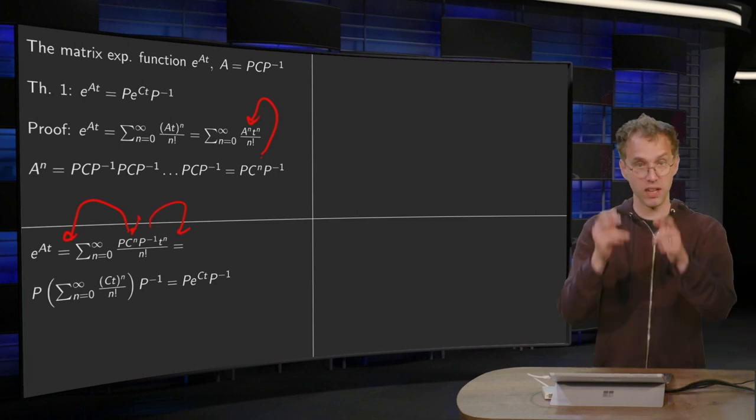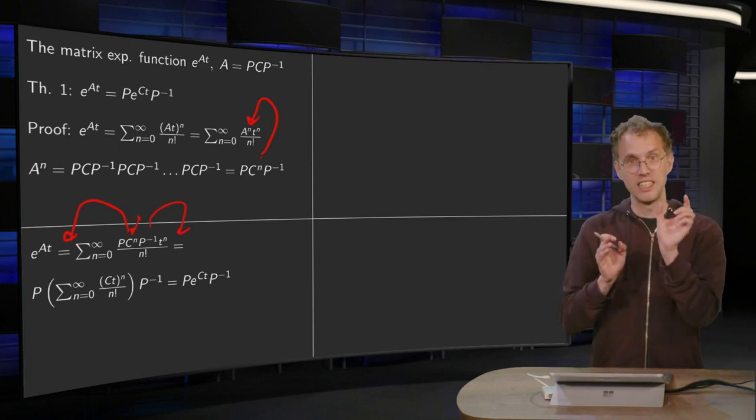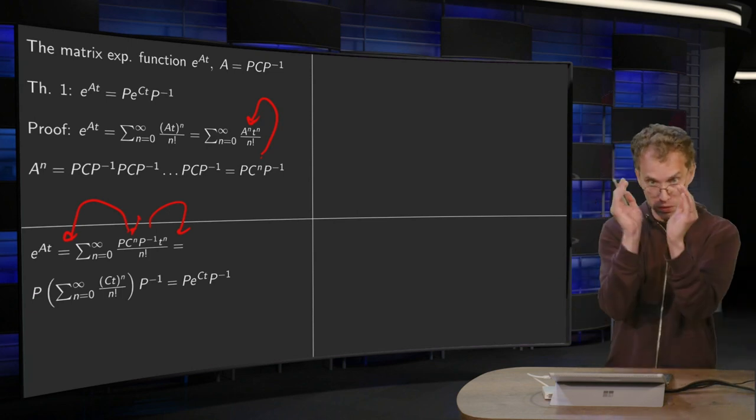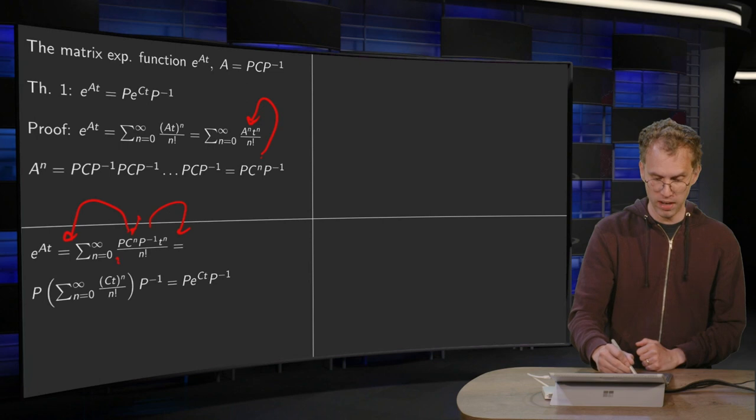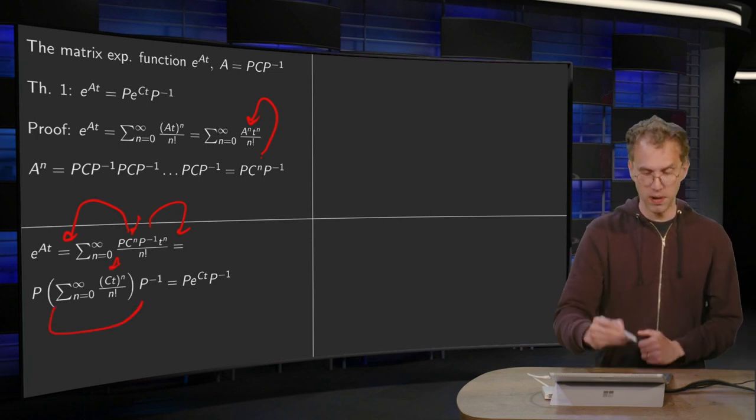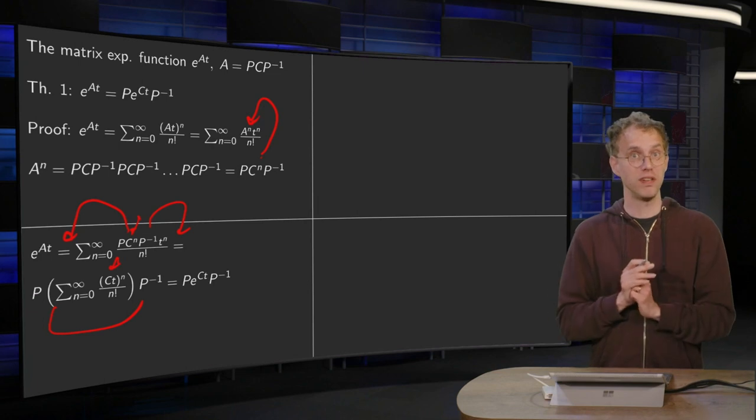And then c to the power n times t to the power n, you can merge this back to c times t to the power n. That's what happened here. And now you see that here between the brackets, that's just the definition of e to the power ct.